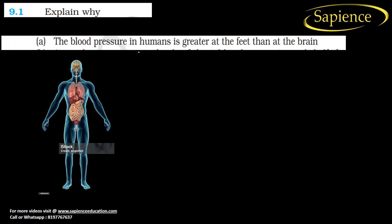The first question asks: explain why blood pressure in the human body is greater at the feet than at the brain. We know that the formula for pressure due to any fluid is: pressure equals rho into G into H.